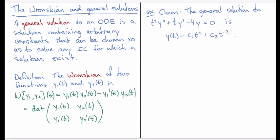Now that we have a Wronskian defined, let's see how this Wronskian comes up in the question of whether we have a general solution. I have made a claim here that the general solution to the equation t²y'' + ty' - 4y = 0 is the function y(t) = c₁t² + c₂t⁻². To test whether this is a general solution, what we need to do is see if we can always solve initial conditions.